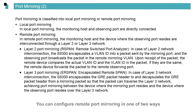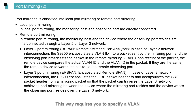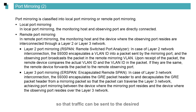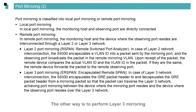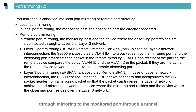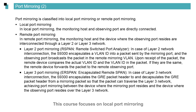You can configure remote port mirroring in one of two ways. One way is to perform layer 2 mirroring, which requires you to specify a VLAN for remote mirroring and forward the captured packets in the VLAN so that traffic can be sent to the desired monitored port across switches. The other way is to perform layer 3 mirroring, which requires you to send the packets obtained through mirroring to the monitored port through a tunnel. In real-world deployment, local port mirroring is more widely used, and this course focuses on local port mirroring.